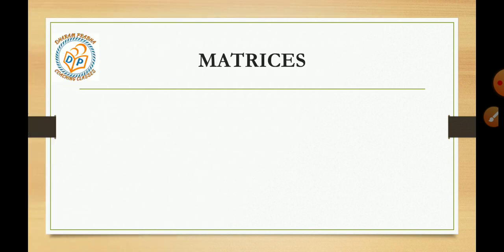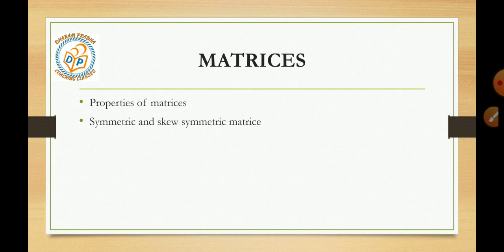Now moving on to chapter number 3, Matrices. This is a very interesting and easy chapter. Within this, important things are properties of matrices: addition, subtraction, equivalence, multiplication. We need to know that A into B is not equal to B into A, unless they are diagonal matrices. We need to know the properties so that we can easily attempt the questions of 1-mark and 2-mark. After that, symmetric matrices and inverse of matrices, you need to know clearly.